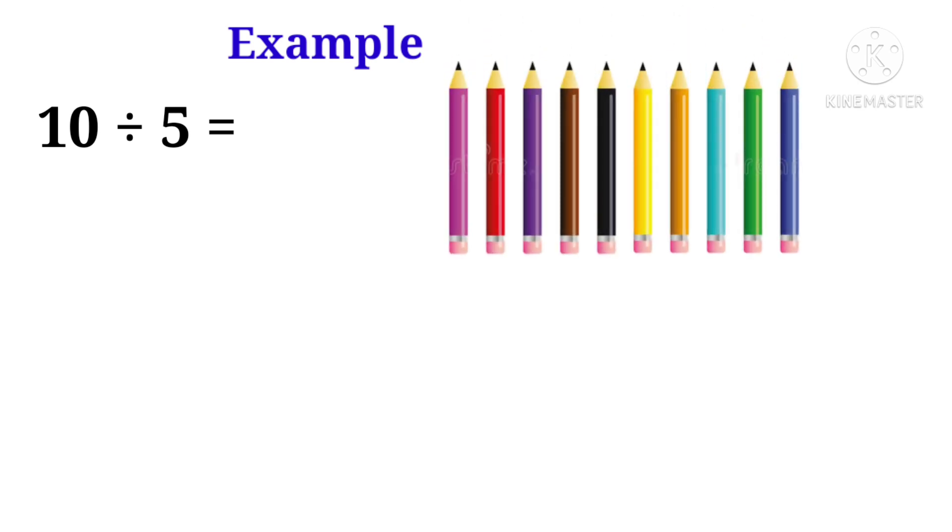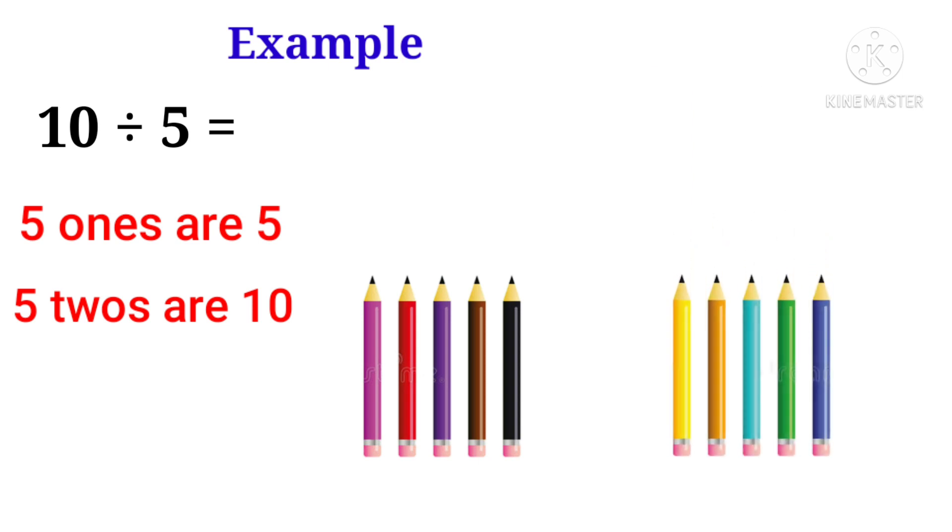Let us take one more example, 10 divided by 5. Here we have 10 pencils and we have to divide these 10 pencils by 5. So we will say 5 times table: 5 ones are 5 and 5 twos are 10. So these 10 pencils will be divided in two groups, 1 and 2. Each lot or group contains 5 pencils. So 10 divided by 5 is equal to 2.